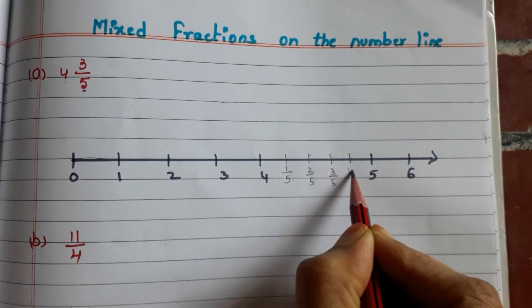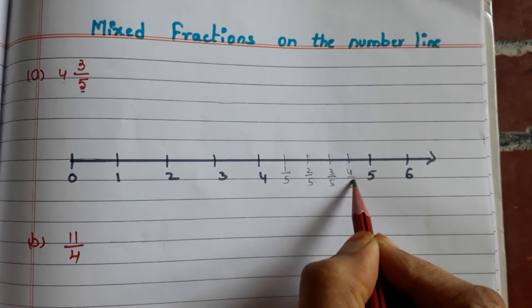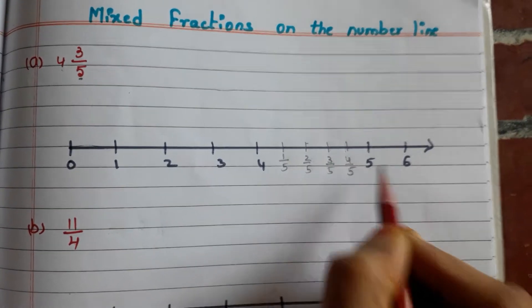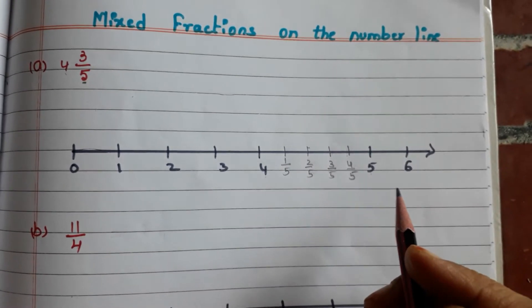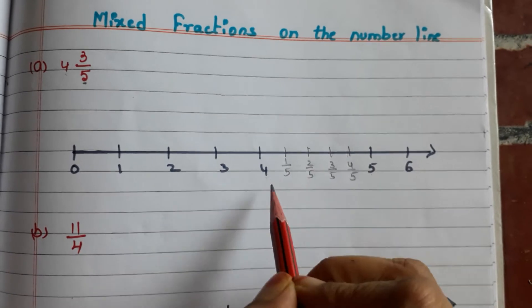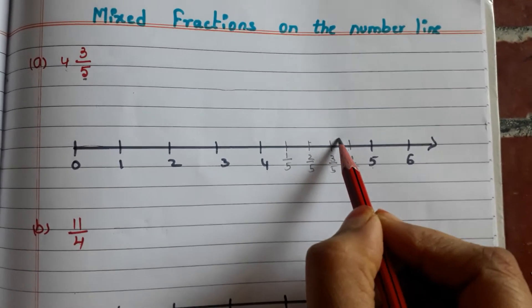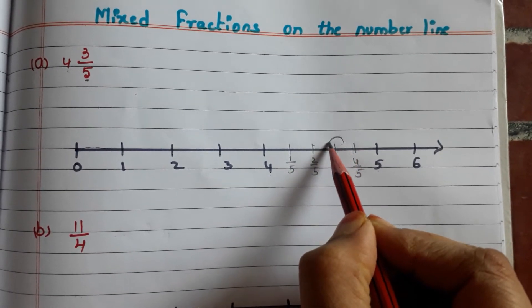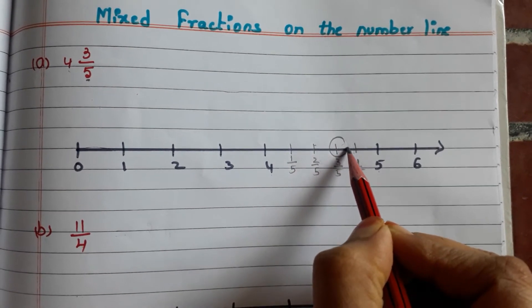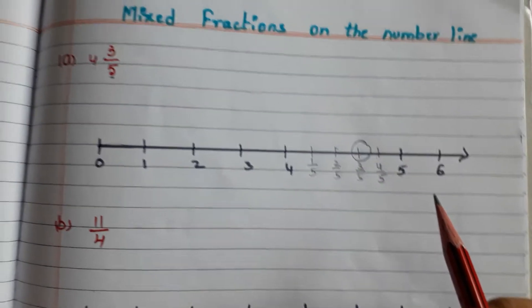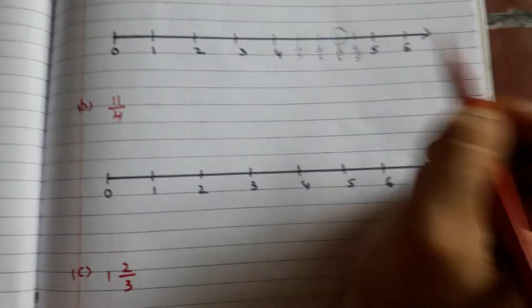4/5, and this is 5/5 — nothing but a whole. Now we have to place 4 3/5 on the number line, so this is 4 3/5. Okay, let us go to the second example.